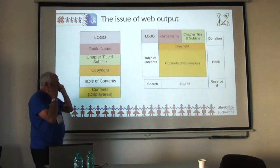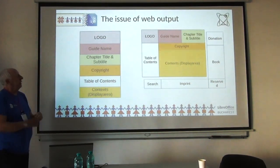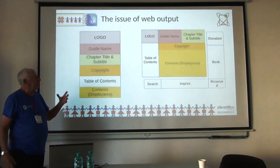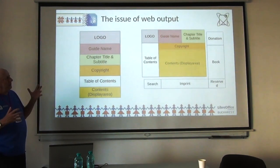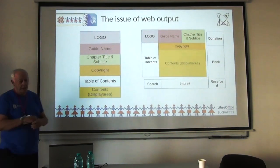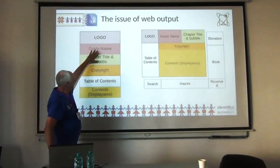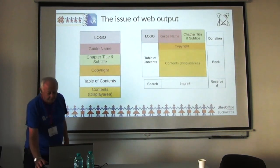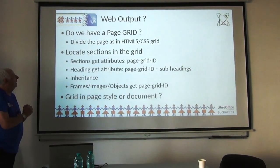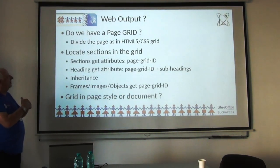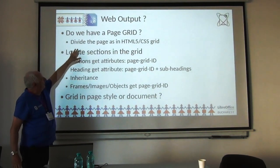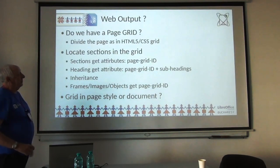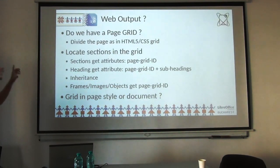All this effort is at the moment very manual, and I'm wondering if we can evolve and have what I call a web output — where I have a document and can export it into a true web page system. The book page and the web page are different, but the contents are the same. My question is: do we have a page grid — something that reminds us of the CSS grid used in HTML5 — so that we can reposition elements of the contents into different real estate positions? I want to associate or locate sections in the grid so I can shuffle everything. Can I get a page grid ID attribute into my section?